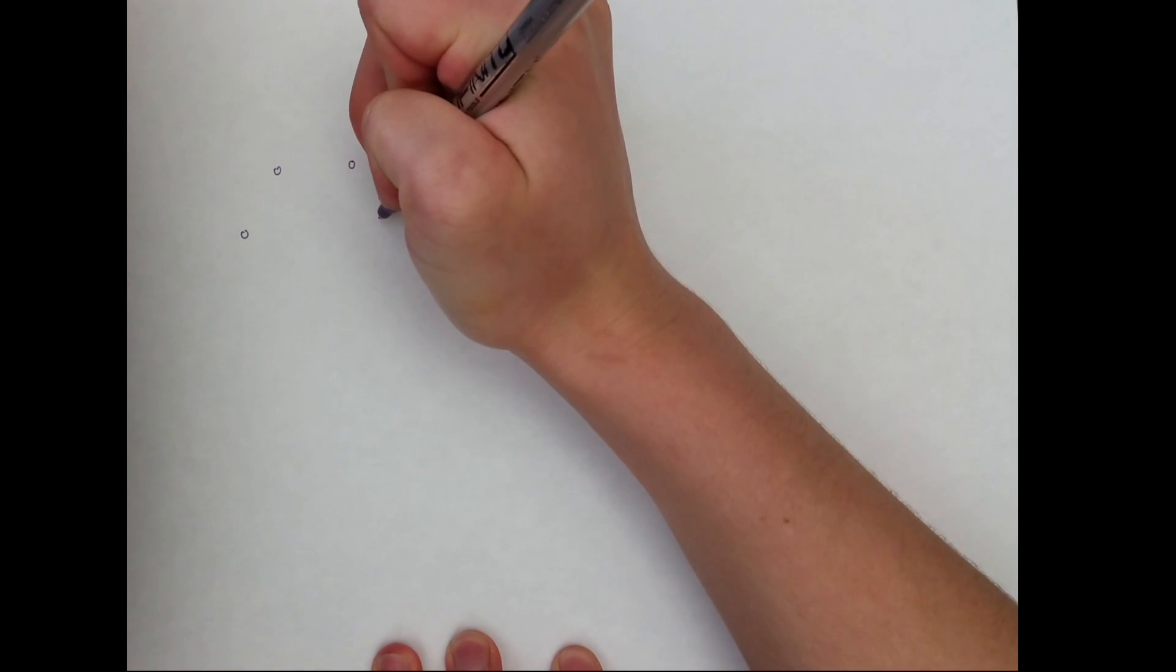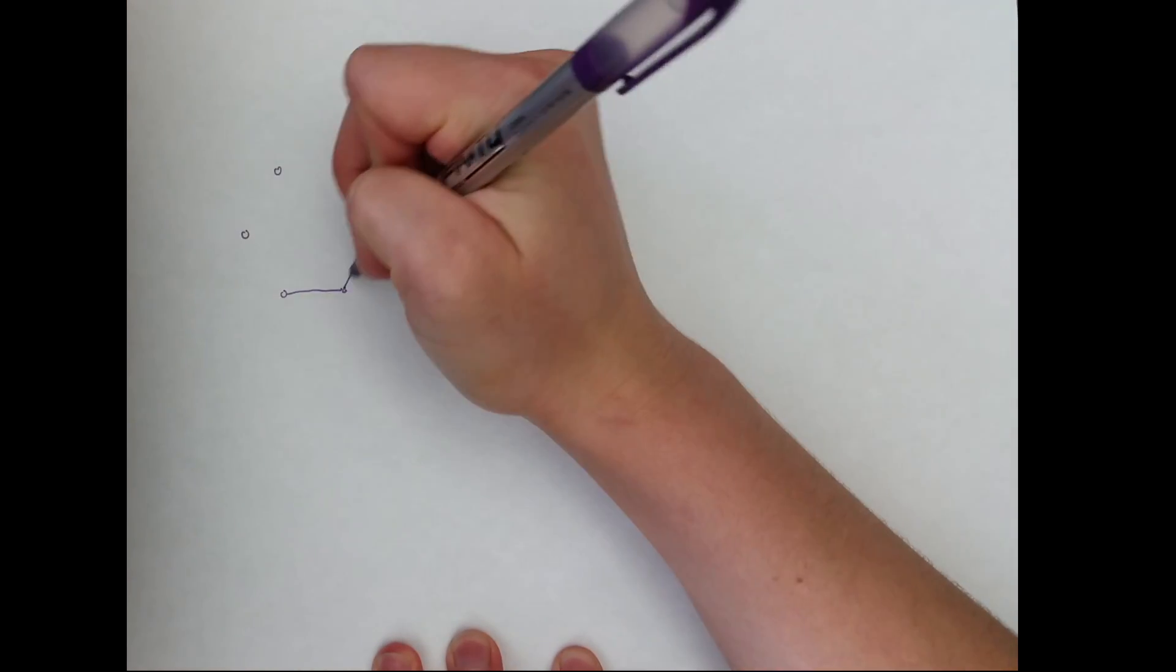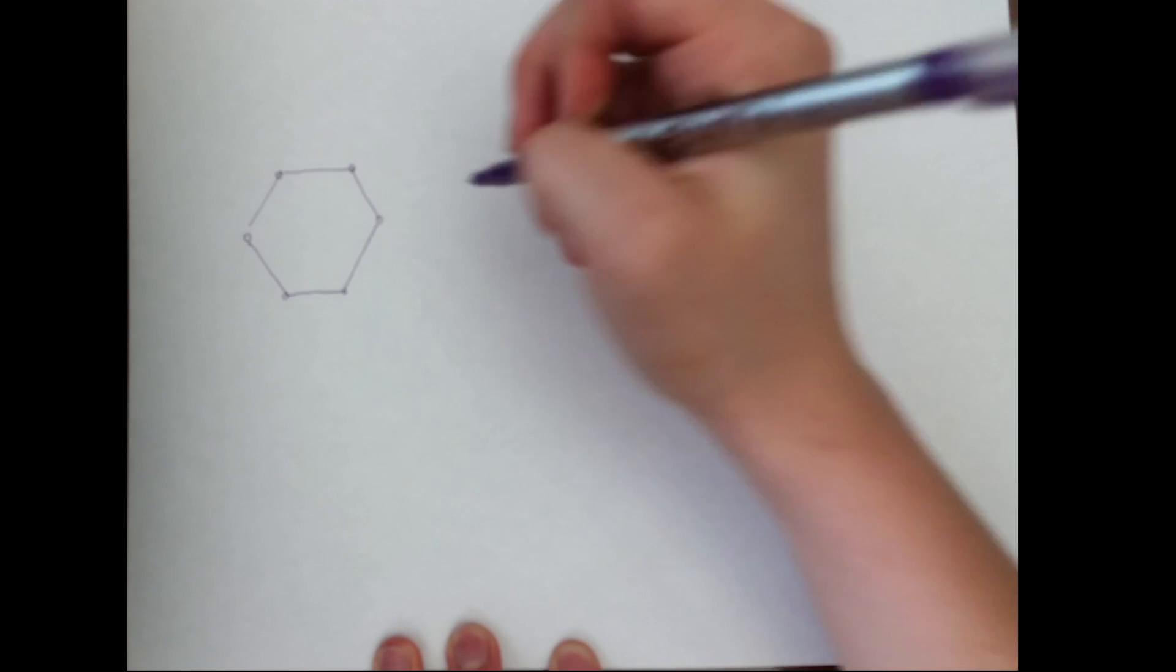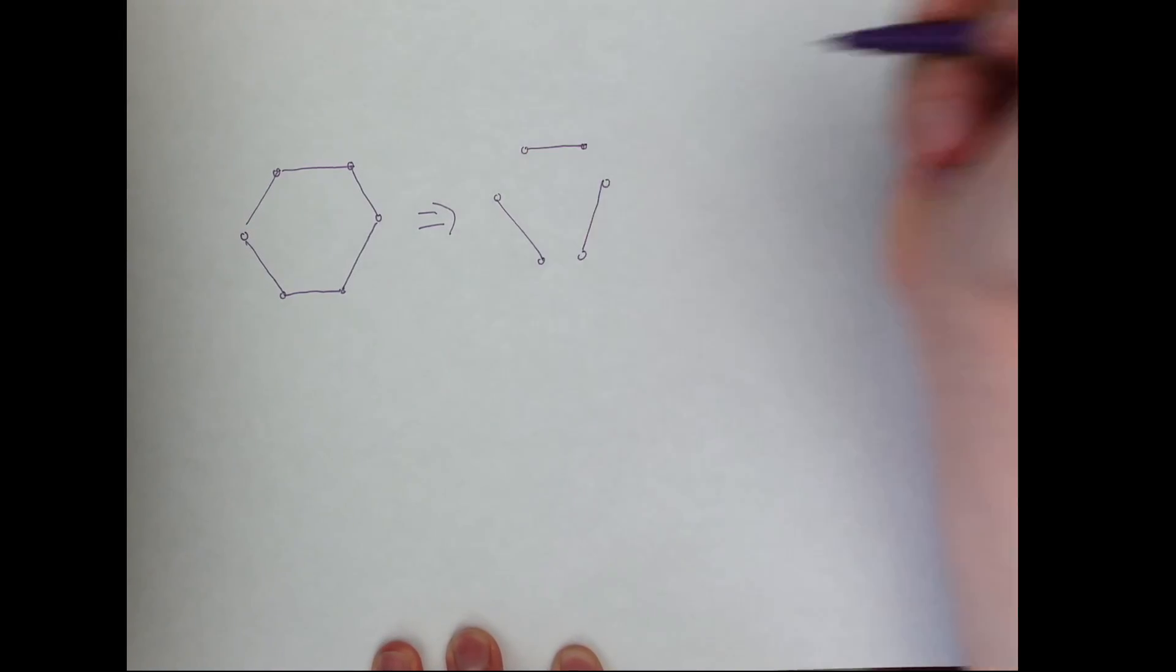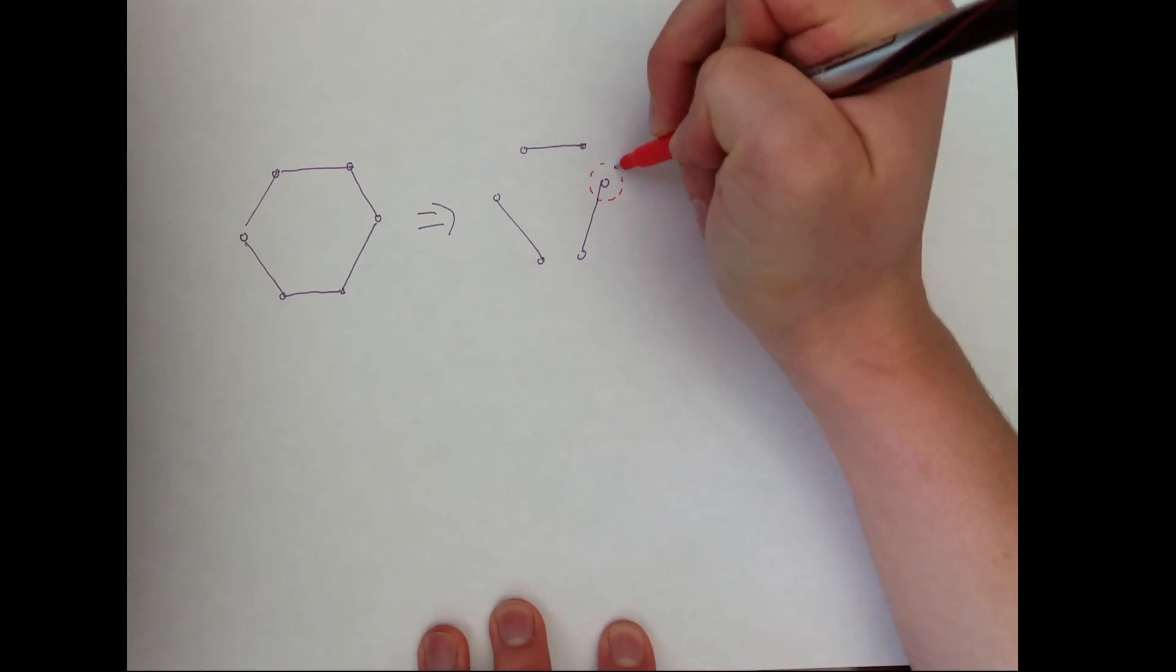Now consider the implication in the other direction. The logic behind this direction is not nearly as complicated. Imagine that g has a one factor. Then you separate g into a collection of disjoint components, each with two vertices, effectively creating a perfect matching.